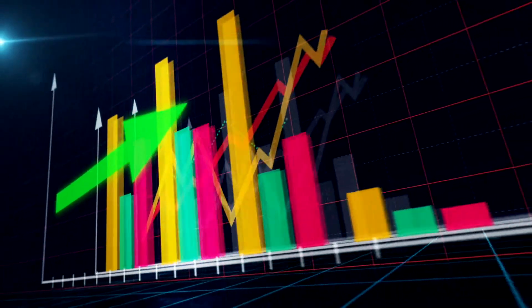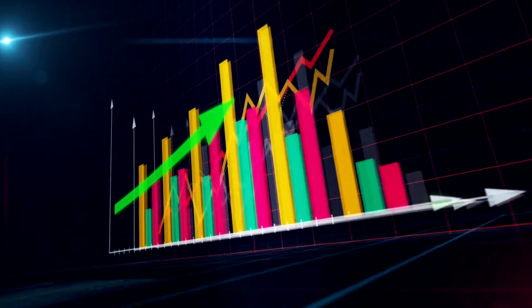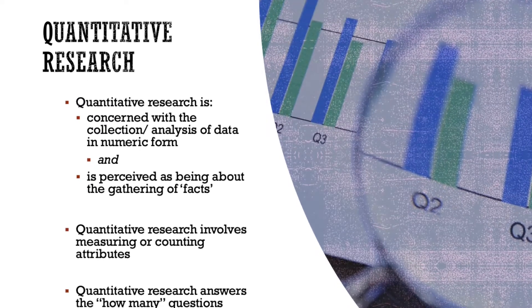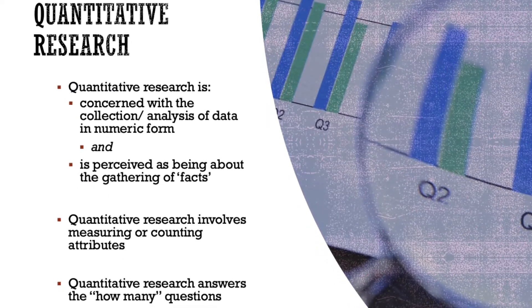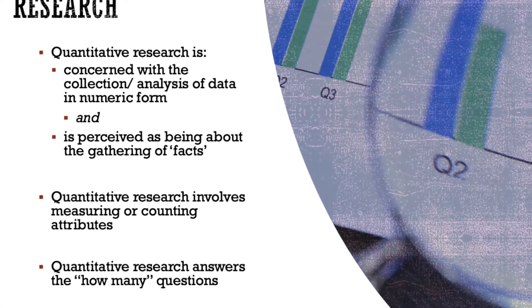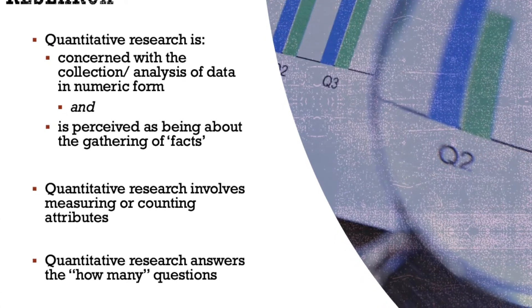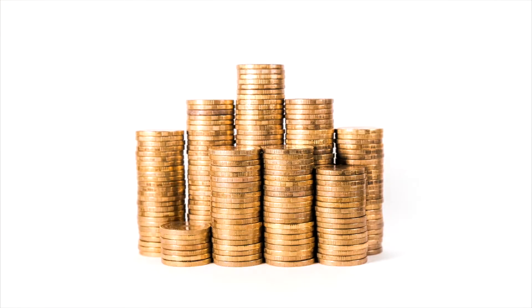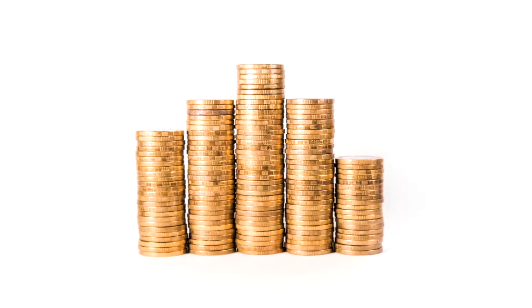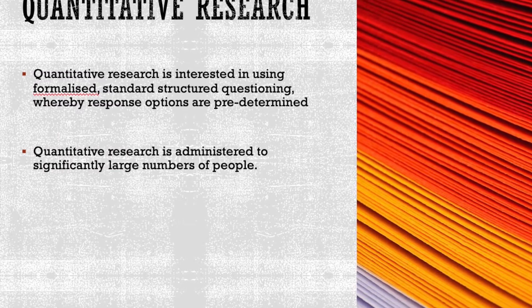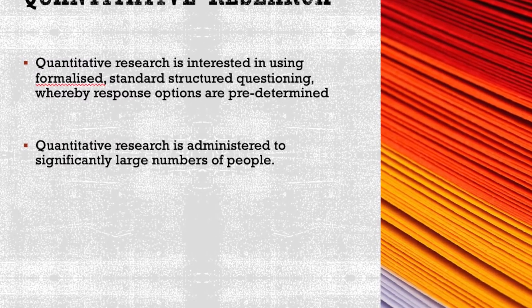Let's start off by explaining exactly what we mean when we say quantitative research. Quantitative research is research associated with the collection and analysis of data that comes in the form of numbers. It's perceived as gathering facts, it's viewed as being scientific — right or wrong, black or white. Quantitative research involves measuring and counting attributes; it's a kind of "how many" style.